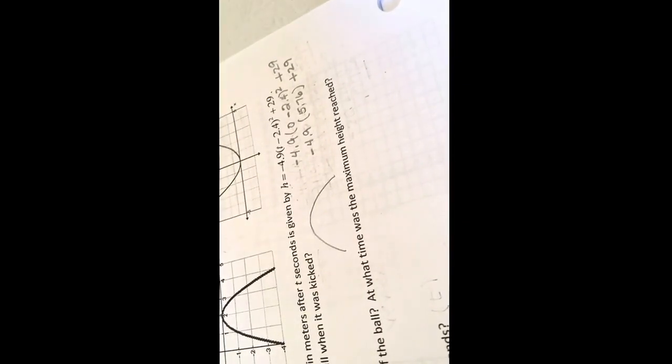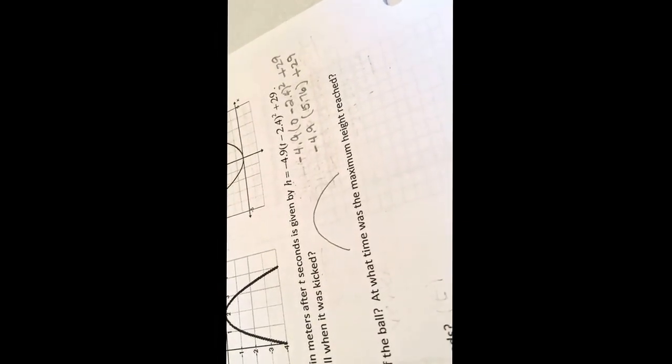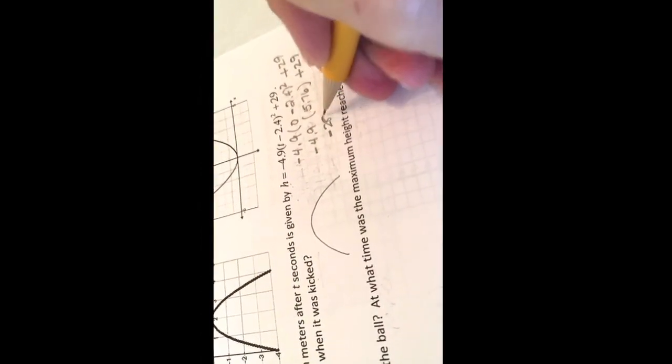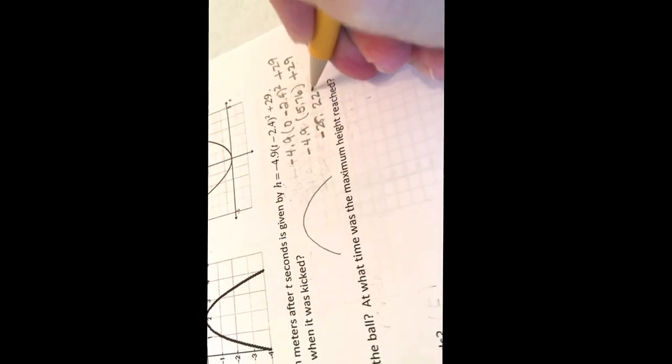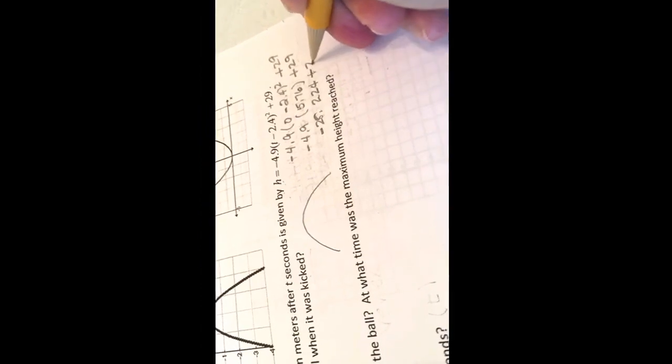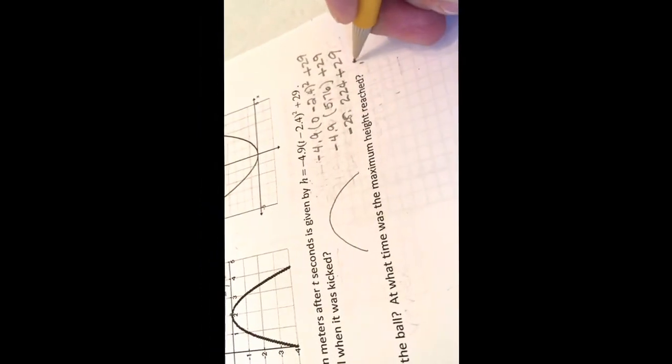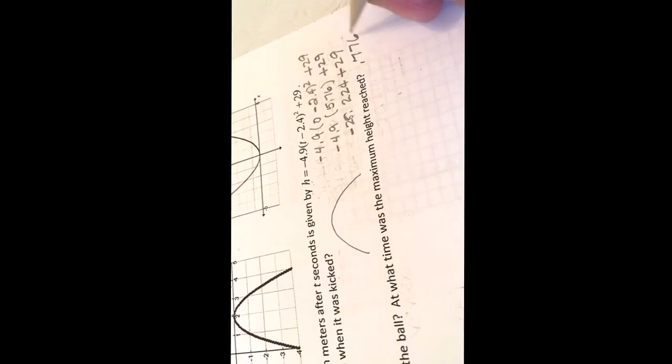Negative 2.4 squared is 5.76 times negative 4.9 plus 29. When I multiply negative 4.9 times 5.76, I get negative 28.224 plus 29. And when I combine those together, I get 0.776 feet.